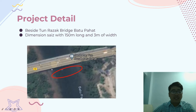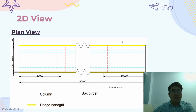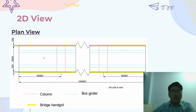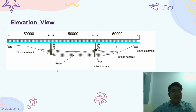As you can see in this video, this is the plan view. We are using a 100mm thickness slab for the bridge deck. As you can see at the cross-section, this is the elevation view. We are using an abutment at both ends.